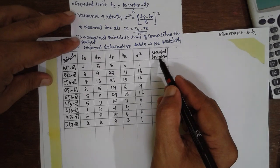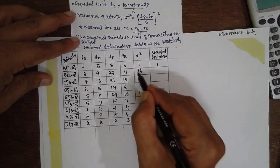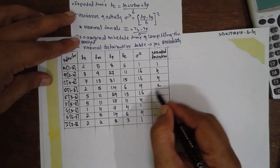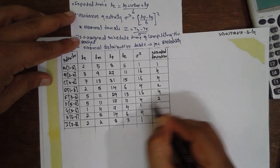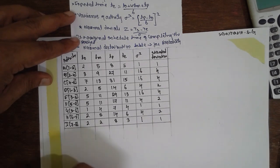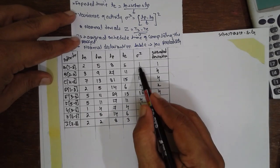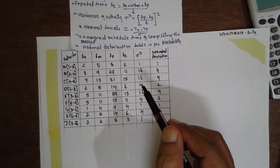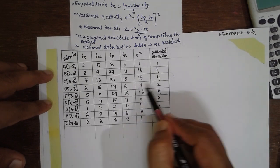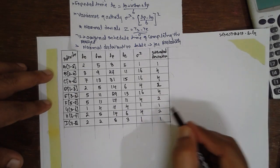The standard deviation is found by taking the square root of the variance. Root of 1 = 1, root of 16 = 4, root of 16 = 4, root of 4 = 2, root of 16 = 4, root of 4 = 2, root of 1 = 1, root of 4 = 2, root of 1 = 1.